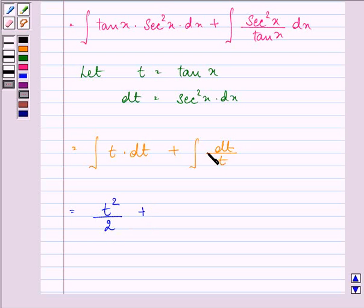plus integral of dt by t is log mod of t plus c. Now on substituting the value of t as tan x we have